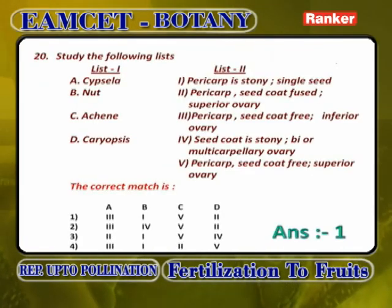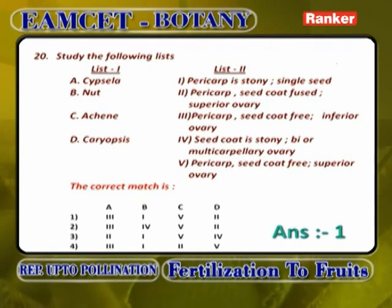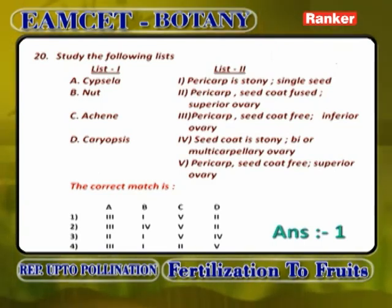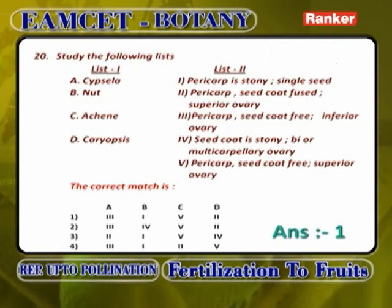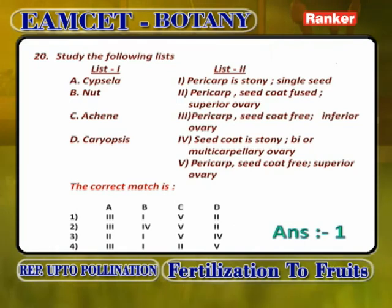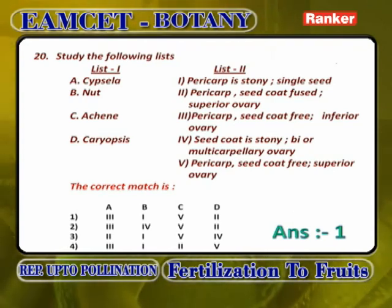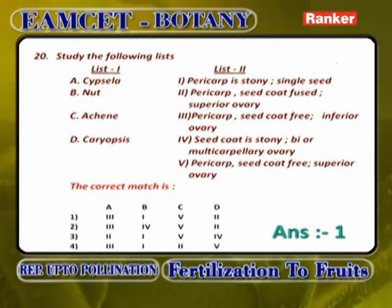Matching fruit types: Cypsela — pericarp and seed coat are free, inferior ovary — A is 3. Nut — seed coat is fused, bicarpellary or multicarpellary ovary — B is 4. Achene — pericarp and seed coat are free, superior ovary — C is 5. Caryopsis — pericarp and seed coat are completely fused, superior ovary; it is a fruit of family Graminae/Poaceae and is called a grain — D is 2. Answer: A3, B4, C5, D2.